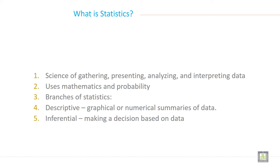There are two branches of statistics. One is called descriptive statistics and another one is called inferential statistics. Descriptive statistics is when somebody uses a graphical or numerical summary of data. Inferential statistics is when you are making decisions based on the data.